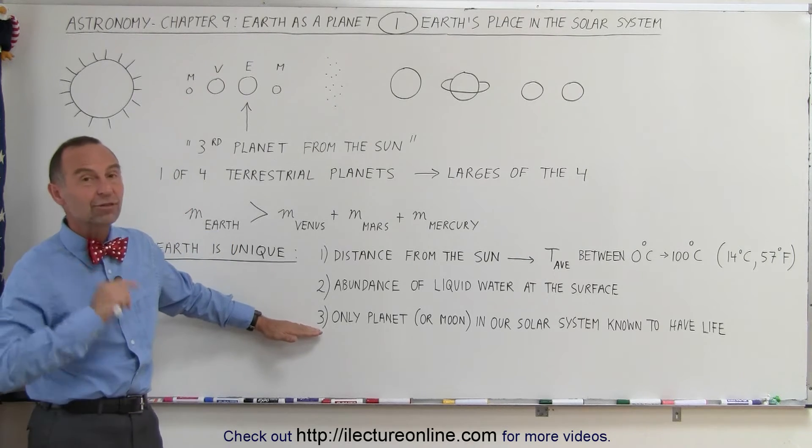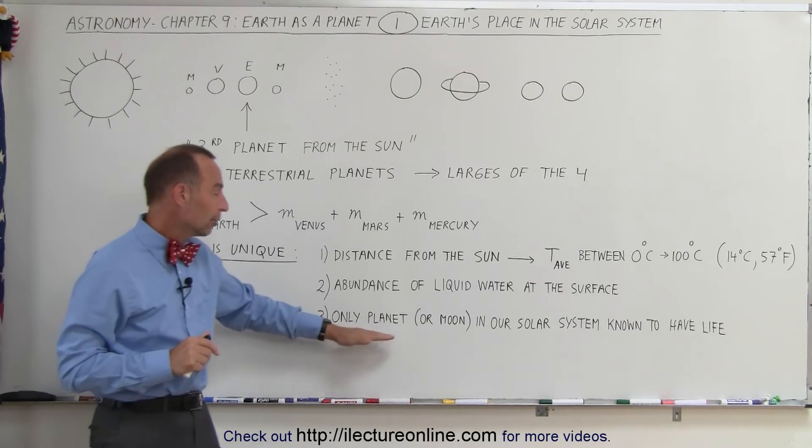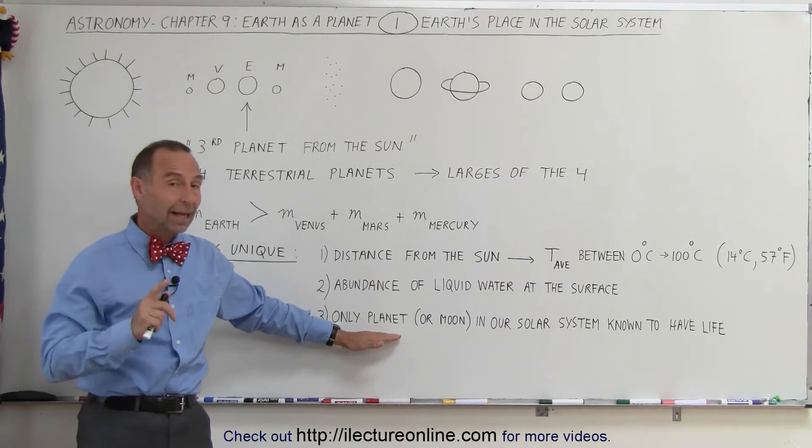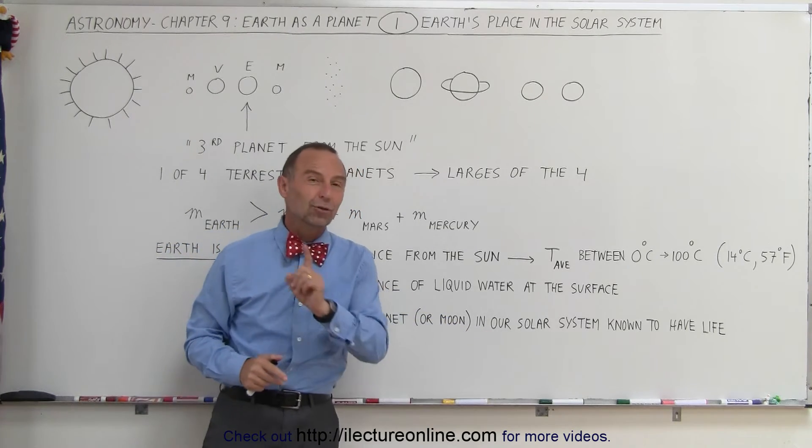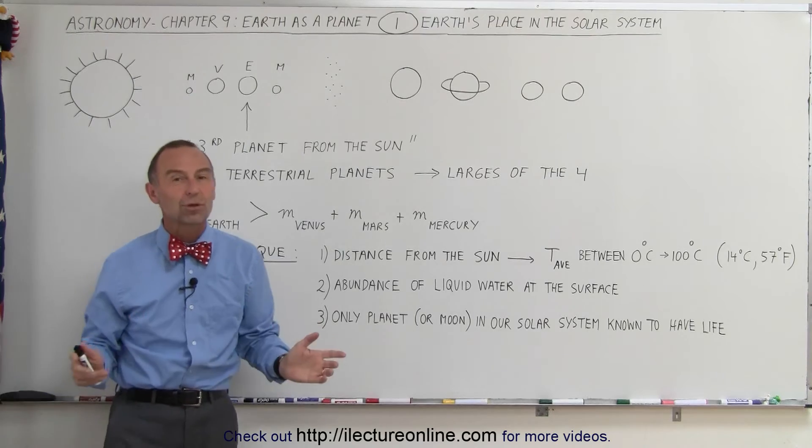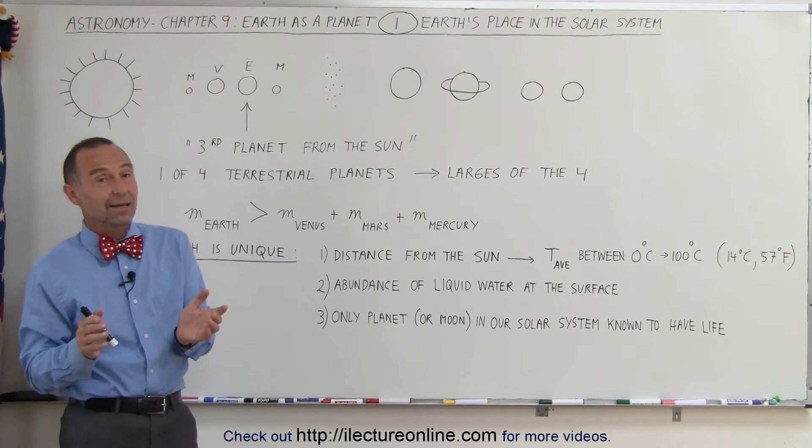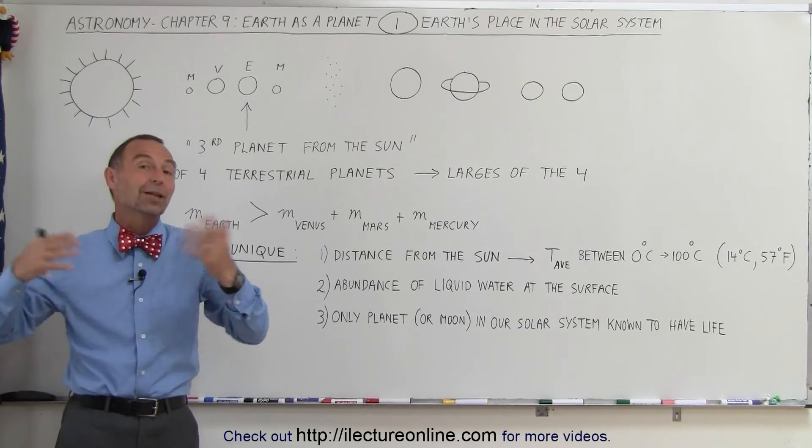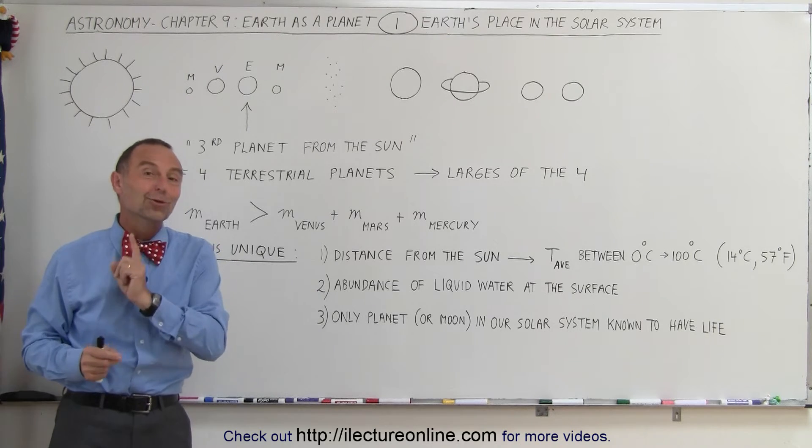And that's the third major difference of the Earth. Only the Earth as a planet or any moon in our solar system is known to have life. That's extremely unique. Now, it could be that life is very abundant in many other places in the universe, but we don't know that yet.